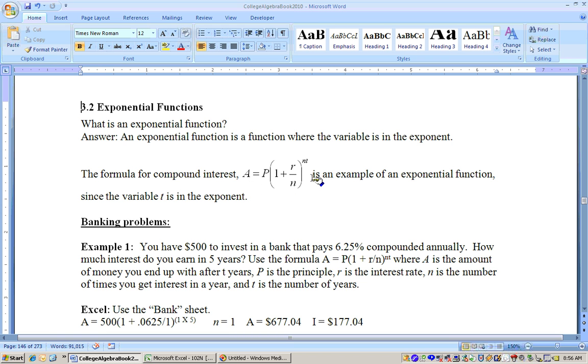This is about a banking problem where A is the amount of money that you end up with in the bank if you make a lump sum deposit principle of a certain amount of money. You're putting a hunk of money in the bank and leaving it there for so many years, t. The interest rate is the rate that the bank gives you, and that has to be typed in as a decimal, like if it's 6%, you type in 0.06. N is the number of times you get interest in a year.